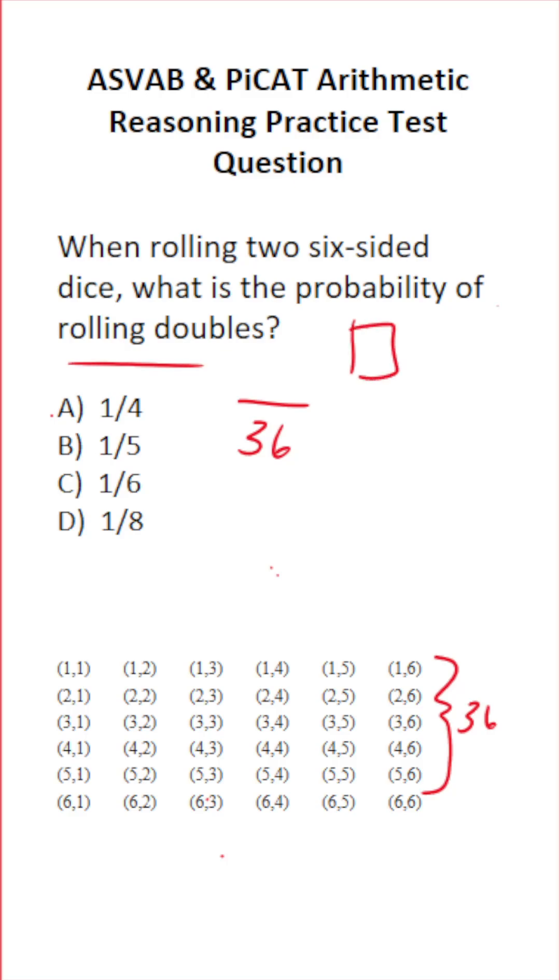Well, doubles means you roll a pair. So, for example, 1-1 is a pair, 2-2 is a pair, and so on and so forth.